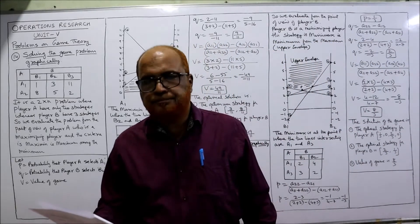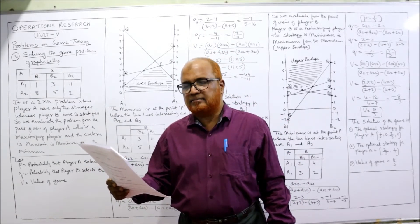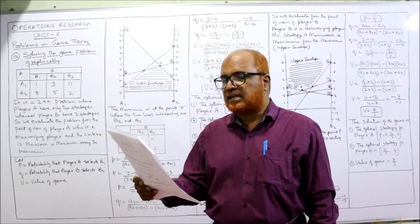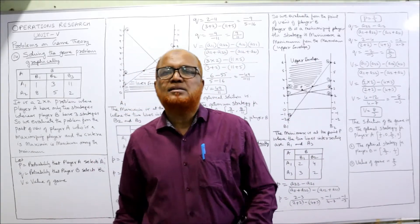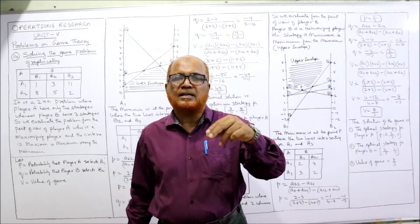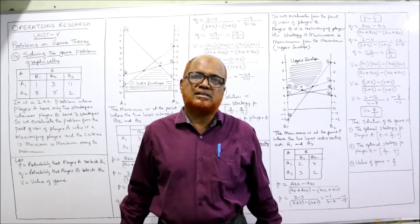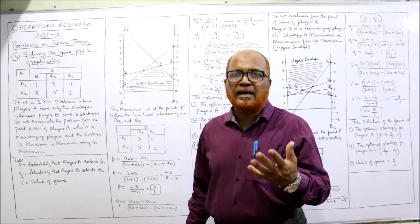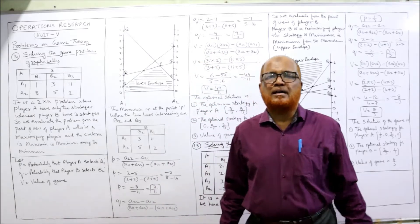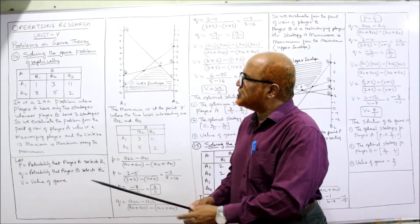Problem number 14: solve the following game graphically. Two rows are given. Player A is having two strategies, 1 and 2, and player B is having three strategies: 1, 2, and 3. It's a 2×n problem with two rows. We evaluate from the maximizing player's point of view. Rows are the maximizing player, columns are the minimizing player. The strategy for the maximizing player is maxi-min, that is maximum among the minimums.